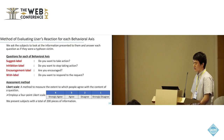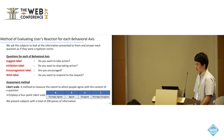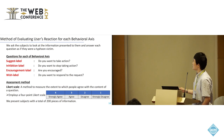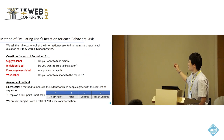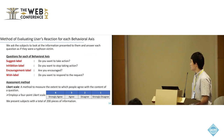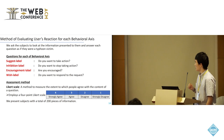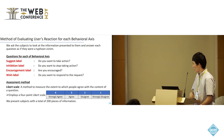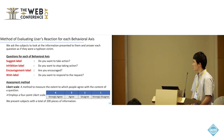Next, I will talk about the method of evaluating user reaction for each BF behavior axis. First, we ask subjects to look at the information presented to them and answer each question as if they are a type of disaster victim. Here is a question for each of the BF behavior axis types. We use a four-point Likert scale, which is a method to measure the extent to which people agree with the content of the question. We present subjects with a total of 200 pieces of information.